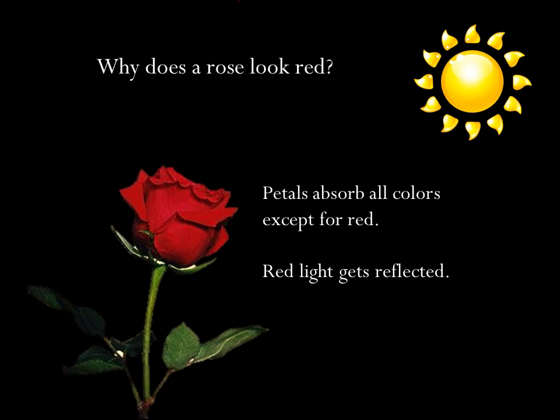The stem of the rose appears green because the stem absorbs all the colors of the light except for green, which gets reflected. This actually tells us something about the rose. The petals must contain different green absorbing molecules than the stem, which must contain red absorbing molecules. We can get even more information about the rose, or anything else, by dispersing its light into a spectrum.